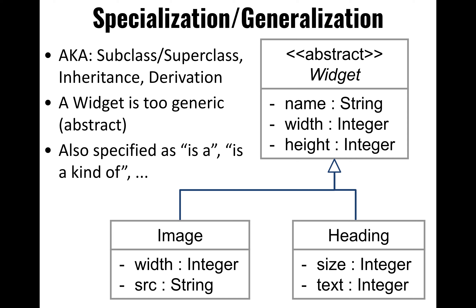One of the challenges of implementing specialization and generalization across multiple tables is that if you want to represent a particular instance of a class, you need to join two tables. With a deep generalization hierarchy — a long inheritance chain — extracting a record from a table way down that chain would require joining all the tables in the chain, which is very expensive. An alternative is to flatten the entire inheritance tree into one single table, though database managers dislike this because it's a denormalized representation, whereas data modelers prefer normalized representations.